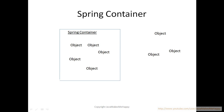Spring container creates objects instead of you writing the code 'new'. Normally we create objects by writing 'new', but Spring container creates objects without writing 'new'. You ask the Spring container to instantiate the object and it passes it to the requesting object. This is something called the factory pattern.